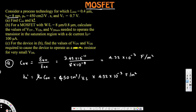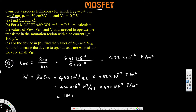Notice that μn is in cm² and C_ox is in m², so we need to convert. To convert μn to m², we multiply by 10⁻⁴, giving units of m²/V·s. Multiplying 450 × 10⁻⁴ m²/V·s by 4.32 × 10⁻³ F/m², the m² units cancel, and we get 194 × 10⁻⁶ F/V·s.